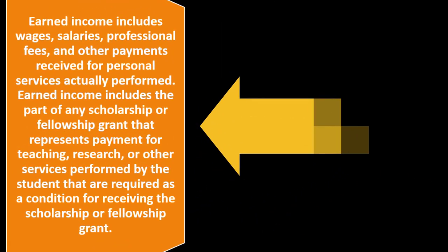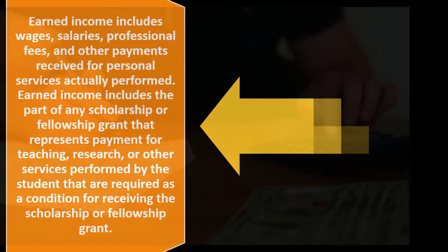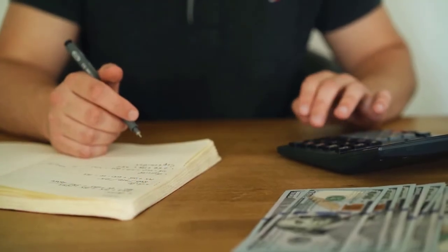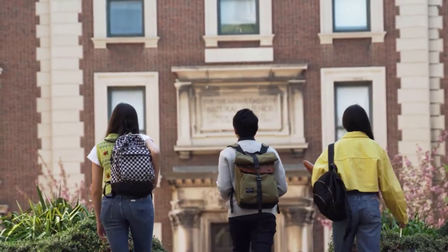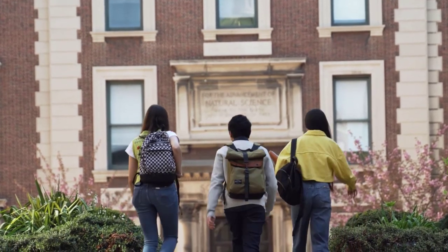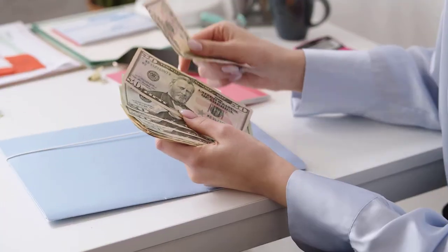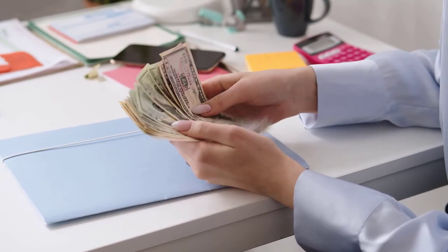Earned income includes wages, salaries, professional fees, and other payments received for personal services actually performed. It also includes the part of any scholarship or fellowship grant that represents payment for teaching, research, or other services required as a condition for receiving the grant. If a grant is really compensation, the institution should give you proper documentation to reflect that — talk to the institution about those situations.